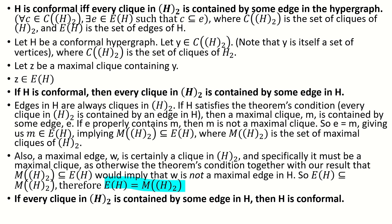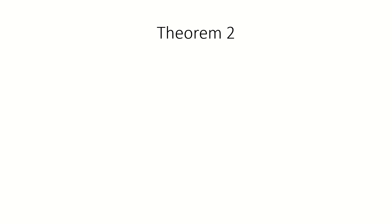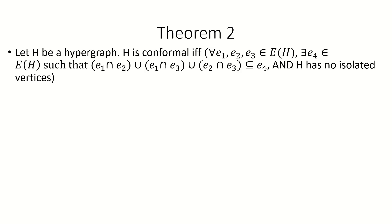Let's move on to our second theorem. The theorem is: a hypergraph is conformal if and only if the hypergraph does not have isolated vertices, and for any three edges, the union of their pairwise intersections is entirely contained by some edge.